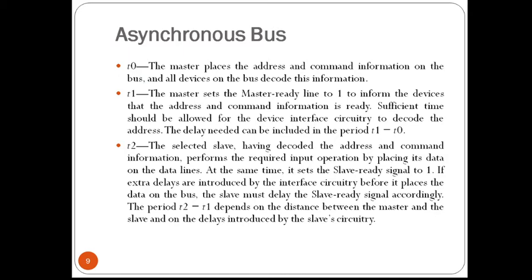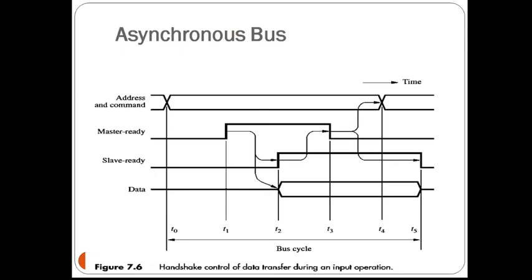Some devices may be close to the master and some far away, so the data transfer time will vary — consuming either fewer or more clock cycles. There will also be some delay on the slave device side which varies by device. This variability enables the asynchronous nature of the bus.